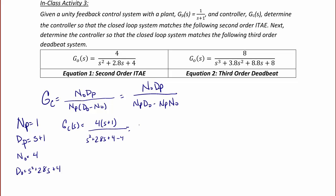So the controller simplifies to 4 times (s plus 1) over s times (s plus 2.8). This is the required controller that you need in order to get a closed-loop transfer function that's the second-order ITAE.